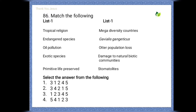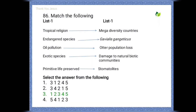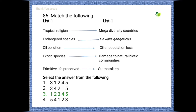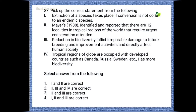Next question: match list one with list two. Tropical region, endangered species, oil pollution, exotic species, primitive life preserved. The matching is: tropical region — mega diversity centers; endangered species — example Gavialis gangeticus; oil pollution — causes water pollution; exotic species — causes damage to natural biotic communities; primitive life preserved — in stromatolites.